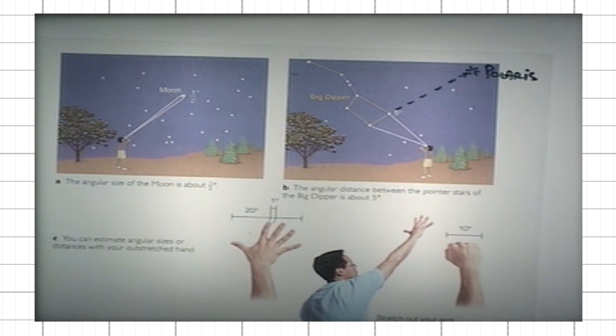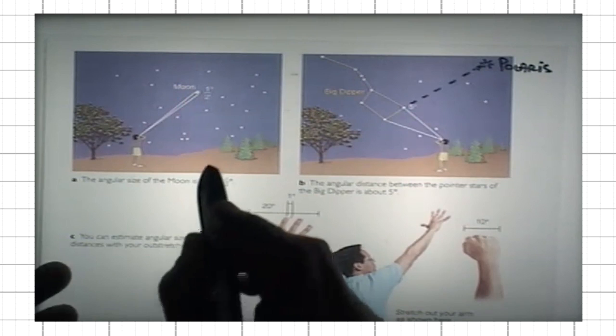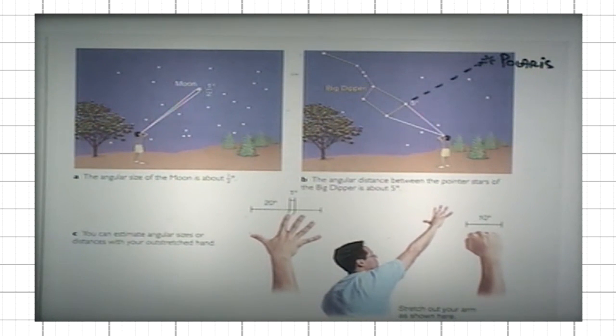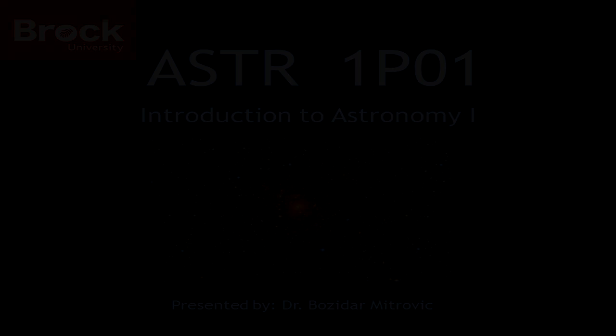That is just the way our brain plays tricks on us - the Moon when it's low in the horizon looks to be bigger than when it is high up in the sky, but there is no actual difference.